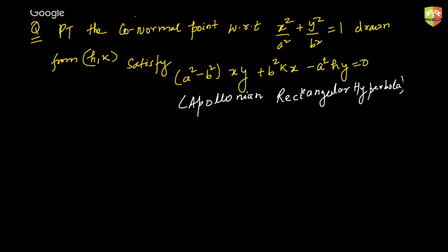This is just for your extra information — nobody will ask you what an Apollonian rectangular hyperbola is. So prove that the co-normal points with respect to this ellipse drawn from h comma k satisfy this equation. It's very, very simple.